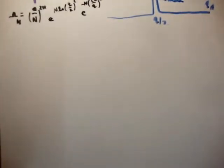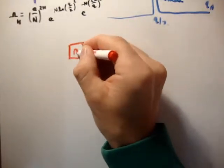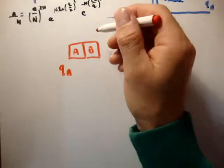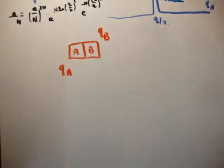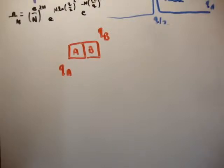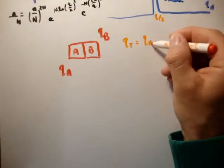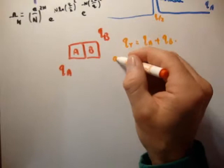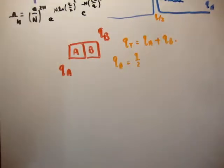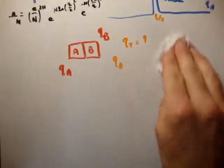We know from thermodynamics that if we have two solids A and B at different temperatures - with Q_a units of energy in solid A and Q_b units in solid B - there will be a flow of energy as heat until there is an equal amount of energy in both. This is the state of equilibrium, defined as the state of maximum multiplicity. With total energy Q equal to Q_a plus Q_b, the equilibrium position will be when Q_a equals Q over 2, and the same for Q_b.